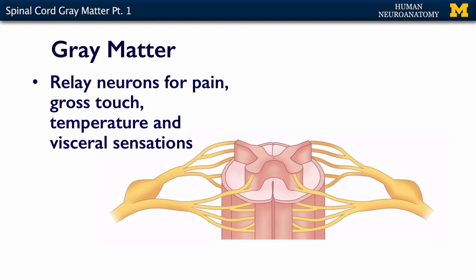In the dorsal horn, neurons are going to be sensory relays for pain, gross touch, temperature, and some of your visceral sensations. Pain and gross touch are going to synapse on little neurons here in the gray matter. We'll talk more about this in the sensory systems lectures. For now, I want you to know that there are neurons that will receive information from these dorsal root ganglion neurons, and these are the neurons that are going to relay it to the brain. In this region are the little neurons that relay primary sensory information from the viscera.